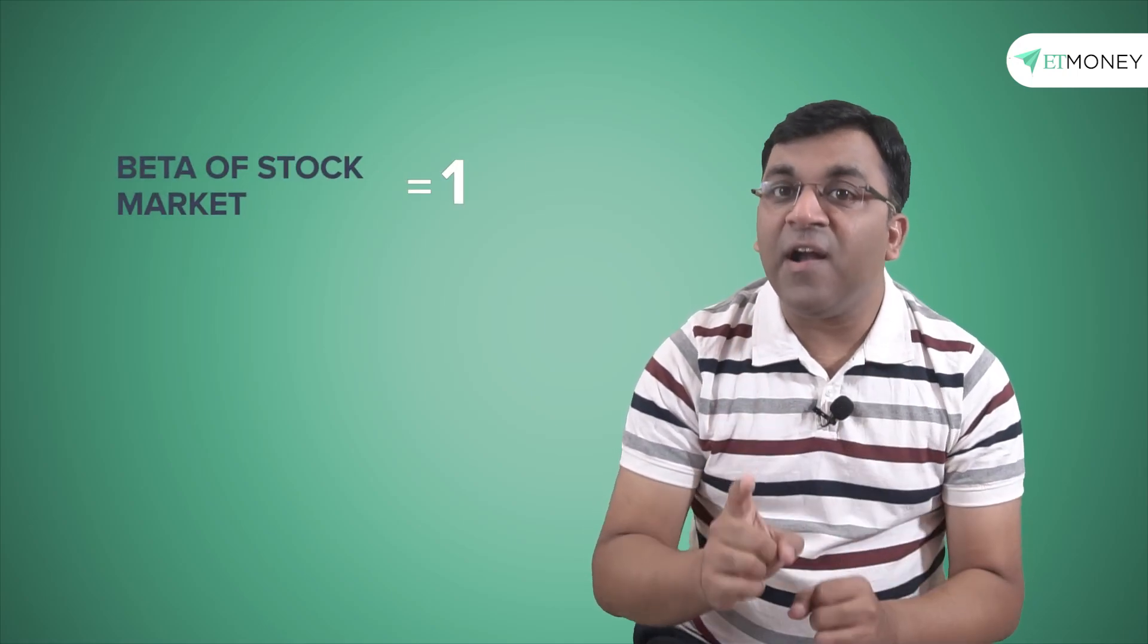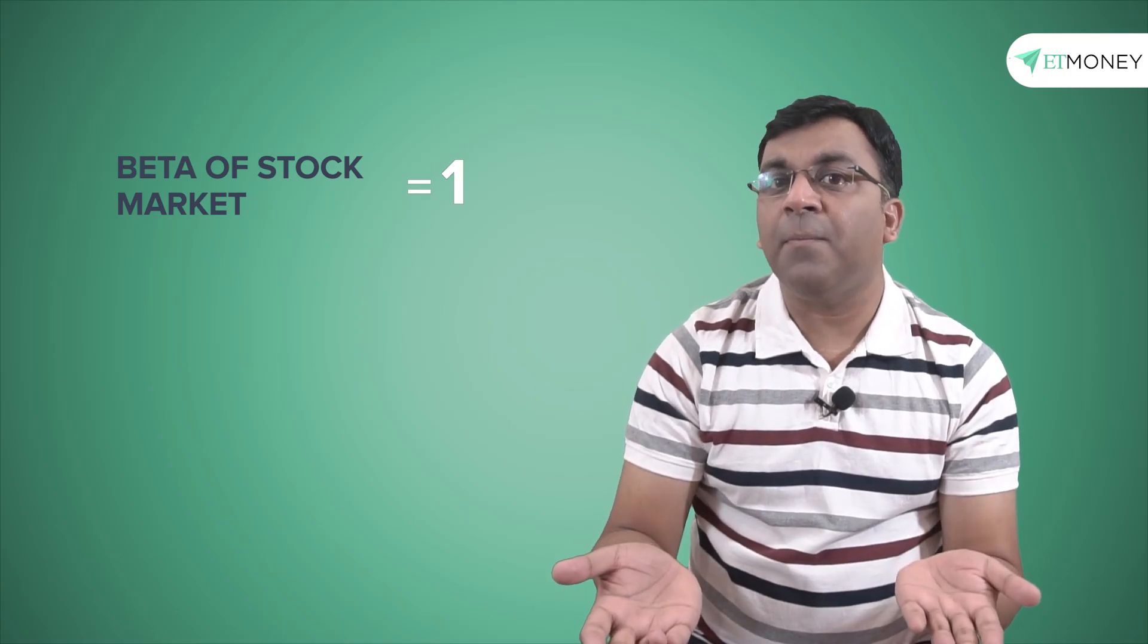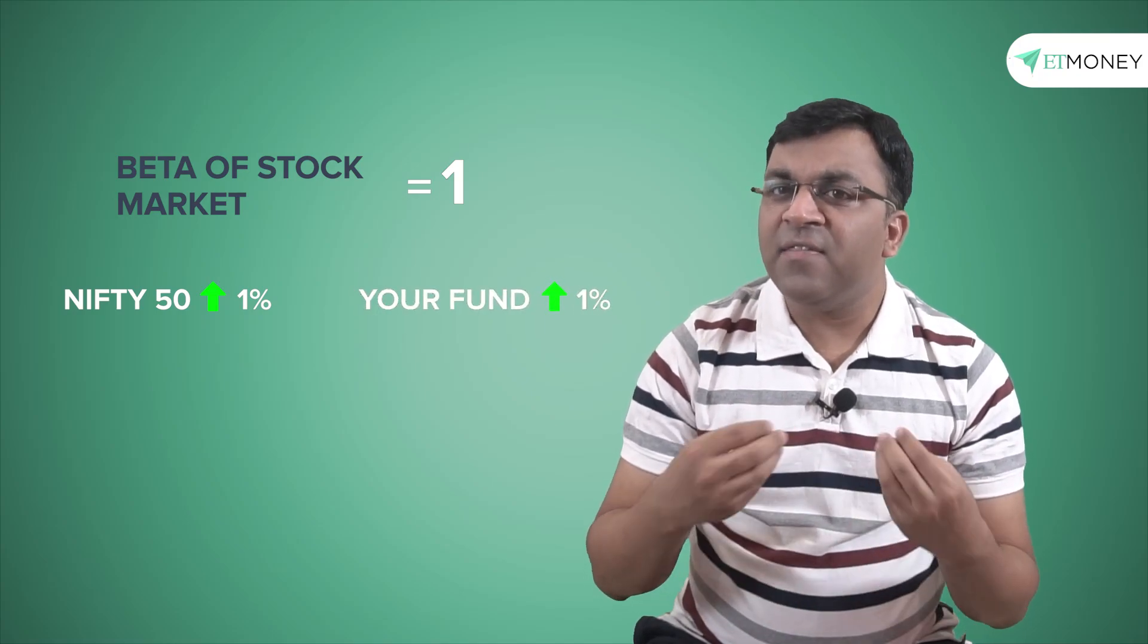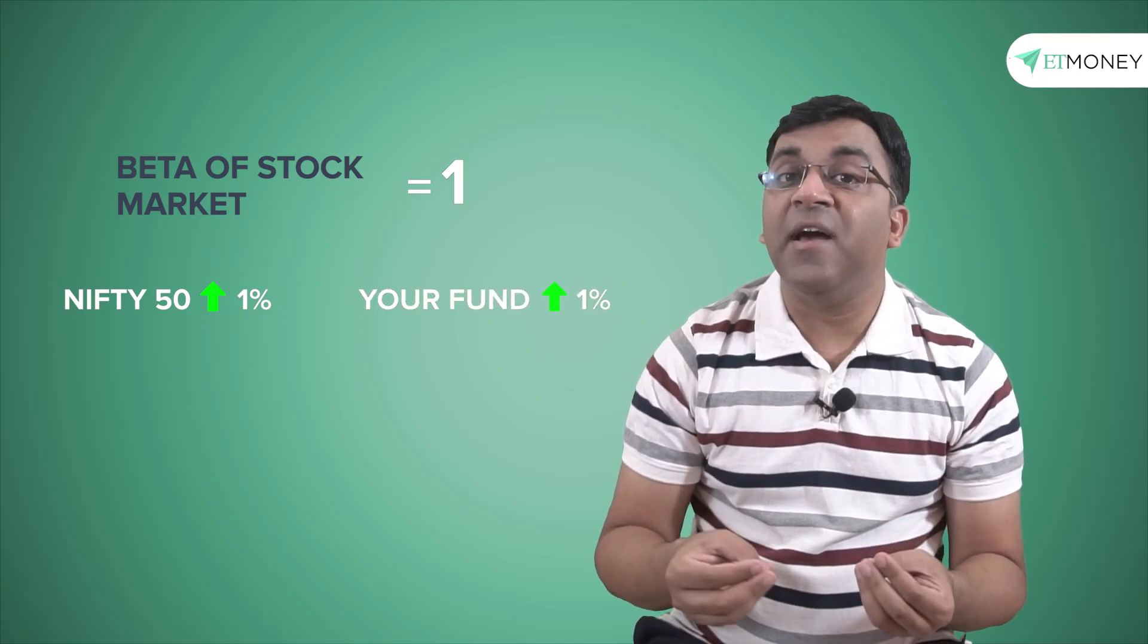For example, if the beta of a mutual fund scheme is 1, it means your fund moves in line with the benchmark. So if the nifty 50 moves up by 1%, your fund is likely to go up by 1%. To put it in another way, index funds have a beta of 1.